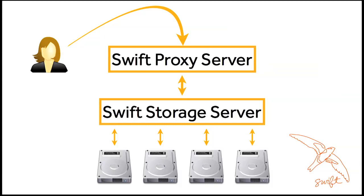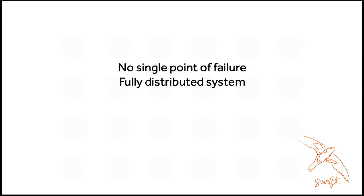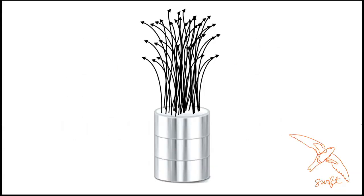When writing out data, the proxy server makes sure it's durably persisted in several locations, and the client gets the right response code back. As soon as the client gets a response that says it's been successfully written, it is available to use. That's not what eventual consistency means within Swift — it will be written right now. Eventual consistency means that when you have failures, Swift will recover from that in the background. There's no single point of failure in this design — no centralized message queue, no centralized database, no centralized index of metadata or location placement. It's a fully distributed system that gets better the bigger you scale it out. Swift is also optimized for massive concurrency across the entire dataset.